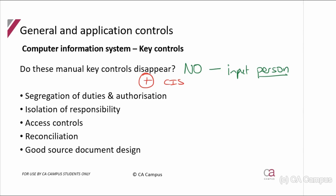Manual key controls — segregation of duties, authorization, isolation of responsibility, access controls, reconciliation, and good source document design — do not disappear when there is a computer information system. They remain relevant wherever a person is involved. However, we also know that additional controls are needed for the computer information system itself, to address all the risks throughout input, processing, and output — ensuring the information is not processed incorrectly and that fictitious information isn't recorded.